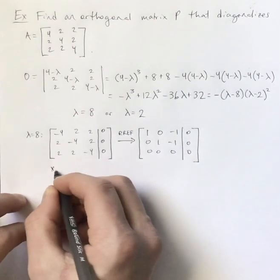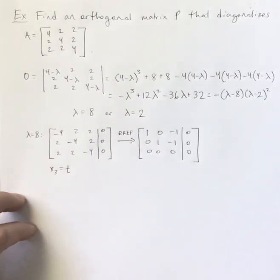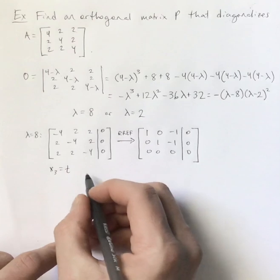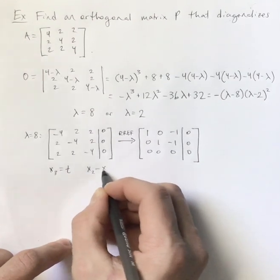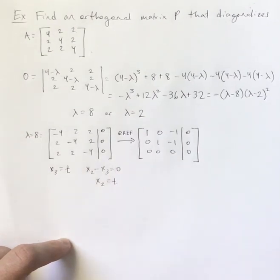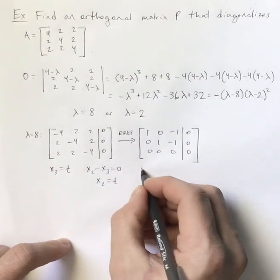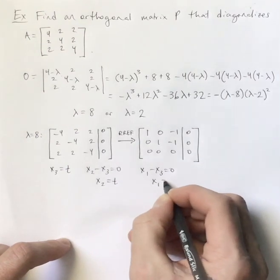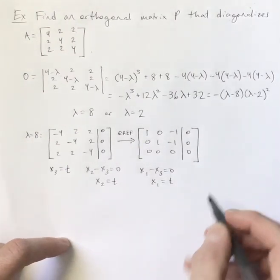So X3 is our free variable, which I will call T. And notice the second equation becomes X2 minus X3 equals 0. So X2 would have to also be T. And then the top equation becomes X1 minus X3 is 0. So X1 would also have to equal T.